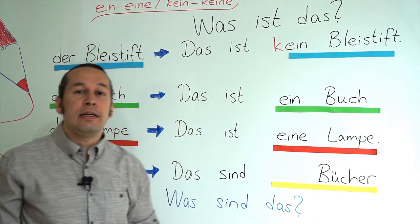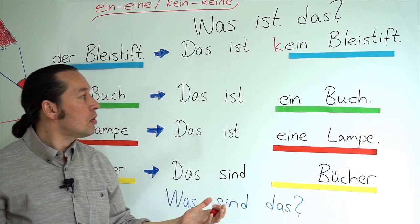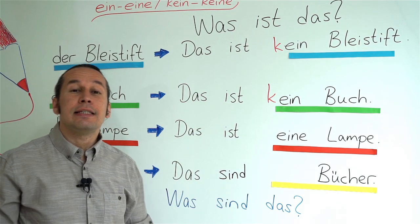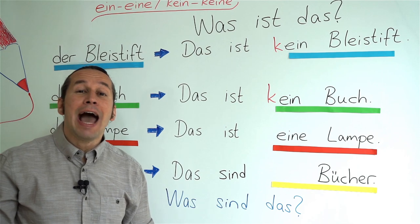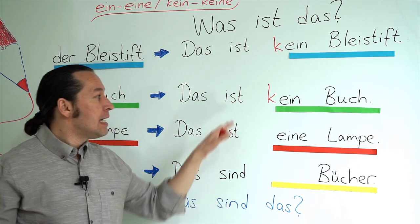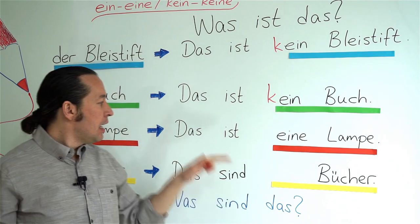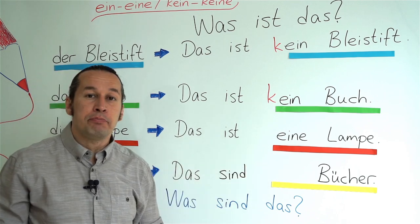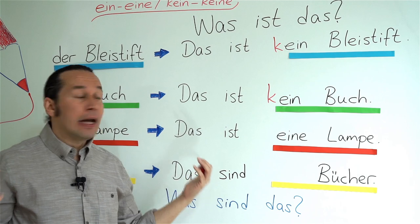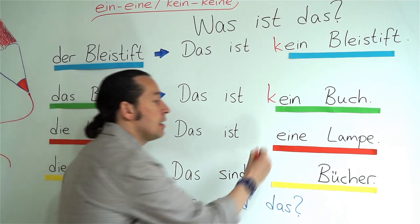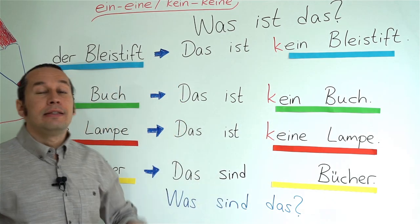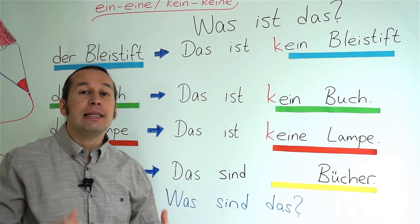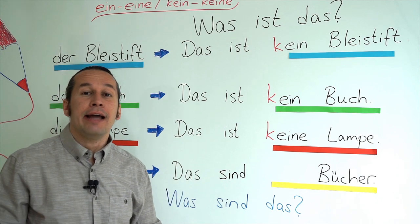For 'das ist ein Buch' — this is a book — the negative form: Das ist kein Buch — this isn't a book. For 'das ist eine Lampe' — this is a lamp — the negative form uses 'keine' because the article is 'die': Das ist keine Lampe — this isn't a lamp.